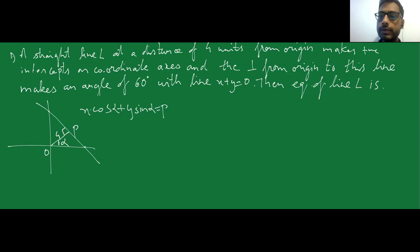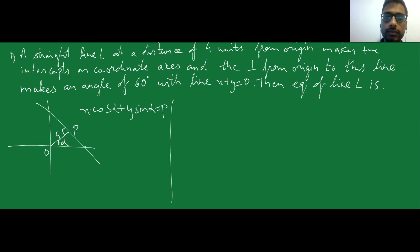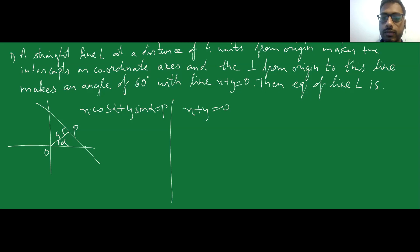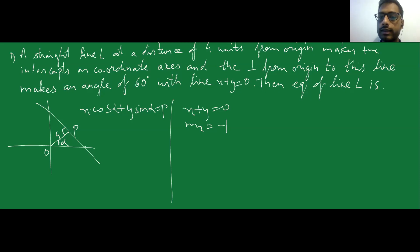There is additional information given: this line makes an angle of 60 degrees with another line x + y = 0. The slope of that line x + y = 0 is −a/b = −1/1 = −1. So the slope of the other line x + y = 0 is equal to minus one.